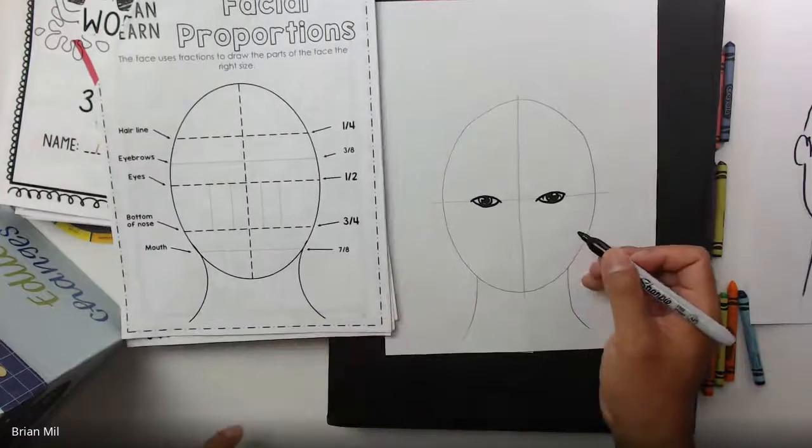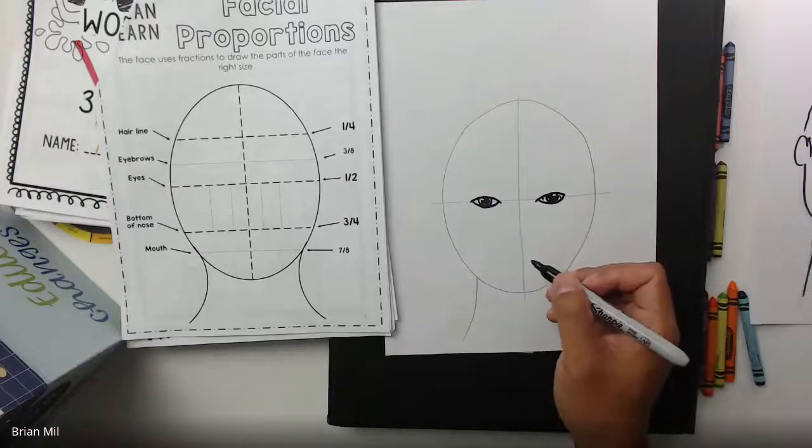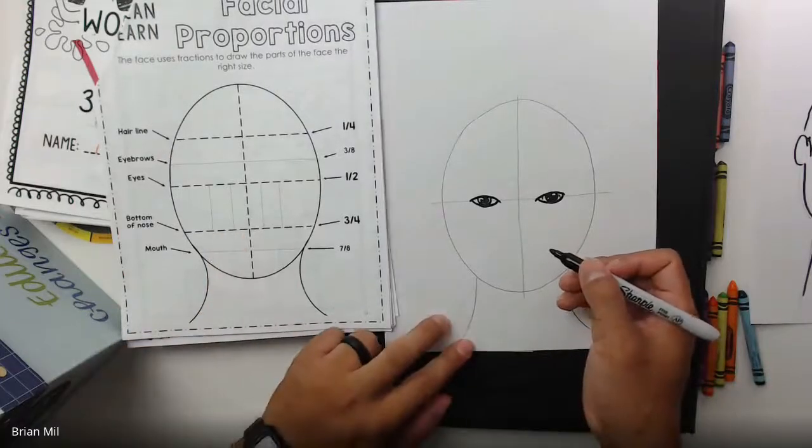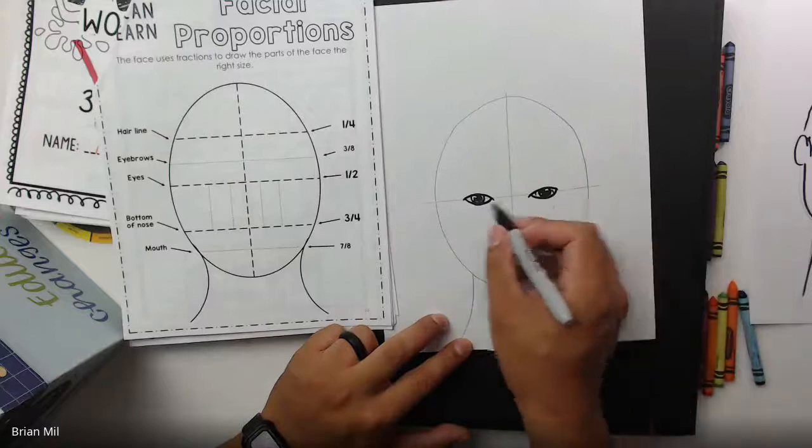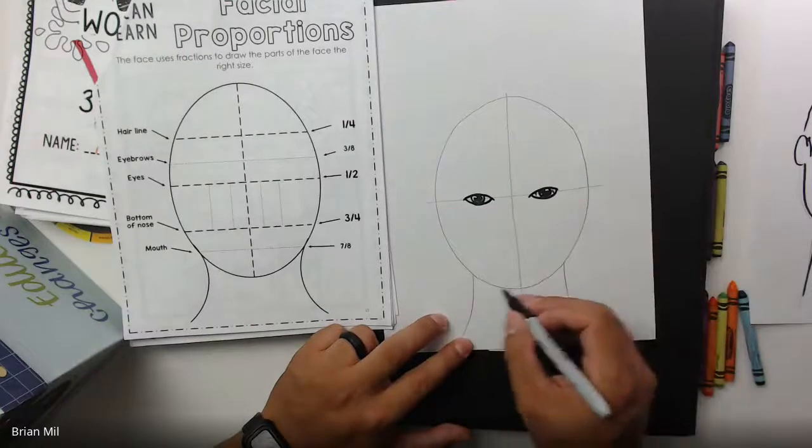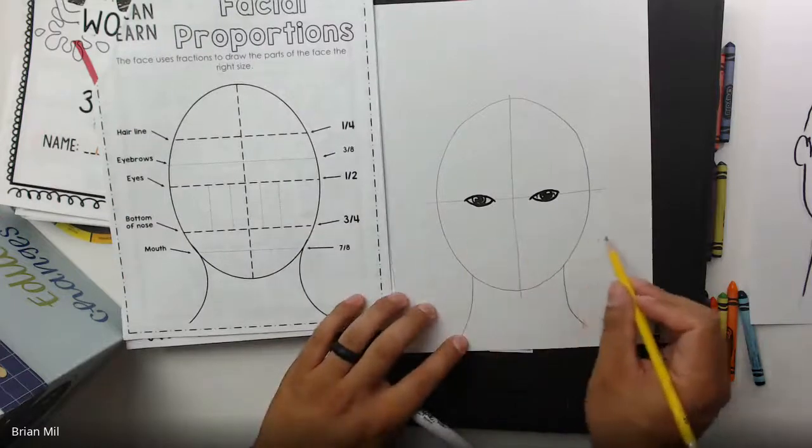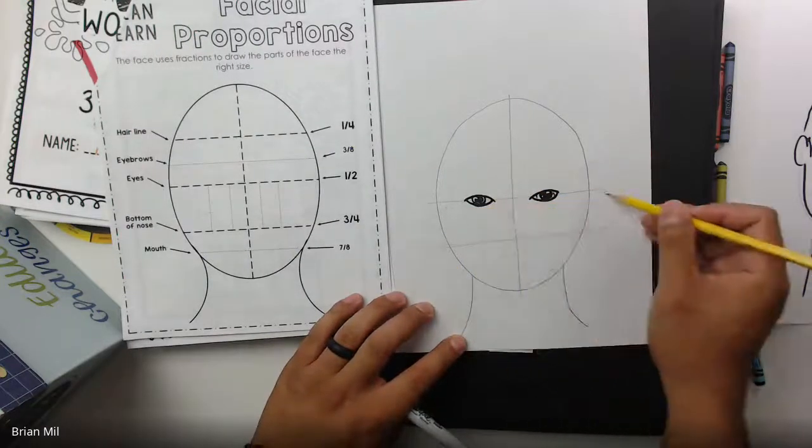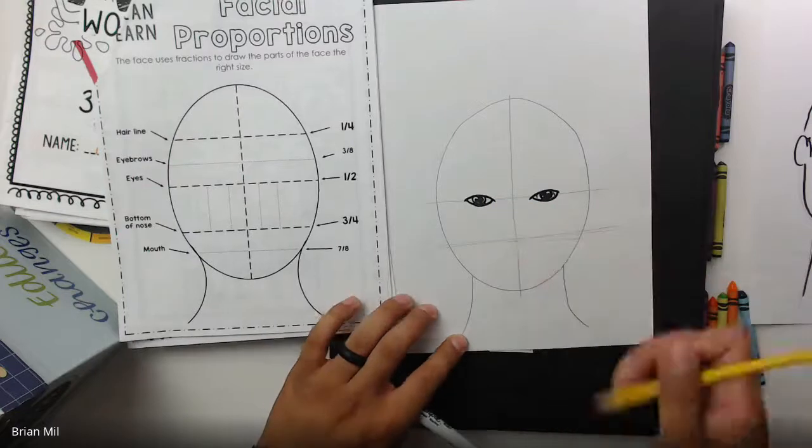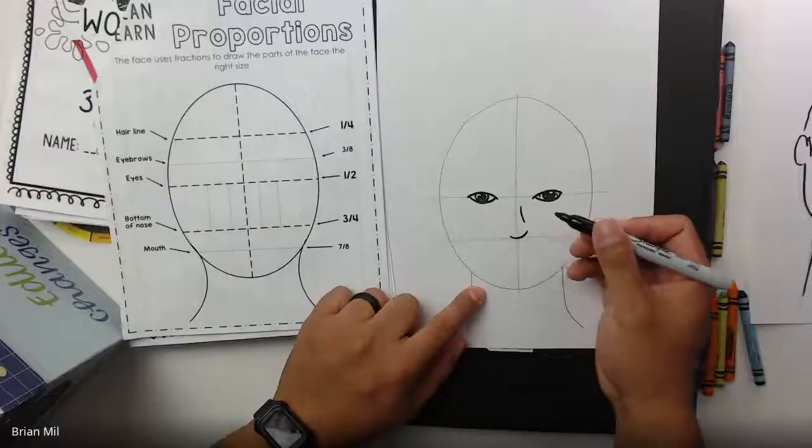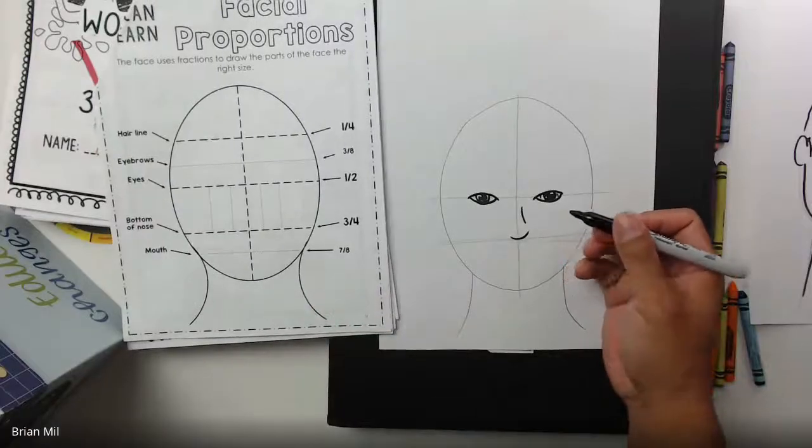And then they're saying the bottom of the nose is halfway between the middle, the midline of the eyes and the bottom of the chin. That's why we have a line right over here. So halfway between the middle of the face and the chin, they're saying is the bottom of the nose. So let's try that. Here we go.